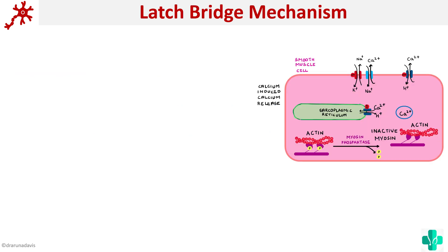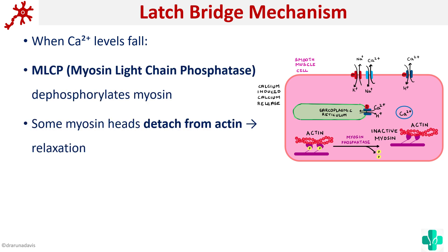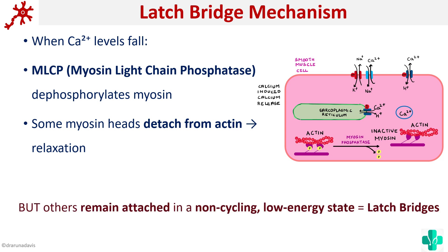There is one more property of smooth muscle called the latch-bridge mechanism. When calcium levels fall, myosin light chain phosphatase dephosphorylates myosin and the myosin head detaches from actin. However, only some myosin heads detach to cause relaxation — others remain attached in a non-cycling, low-energy state. These are dephosphorylated but do not detach from actin, so the cross-bridge remains in a low-energy state. This is especially true in cases where sustained tone is needed, like sphincters. Not every activation of myosin phosphatase leads to complete relaxation; some smooth muscles can enter the latch-bridge mechanism.